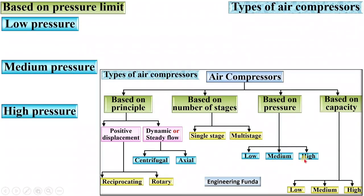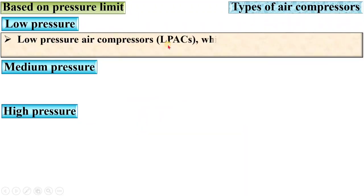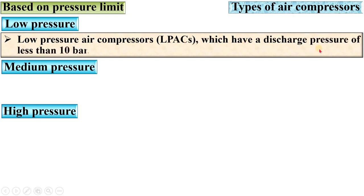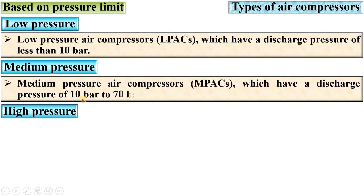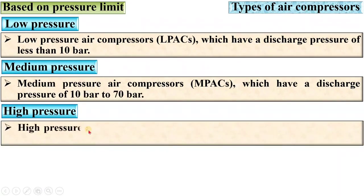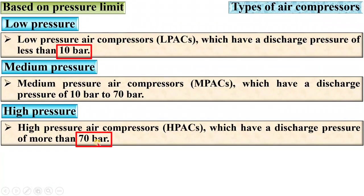Based on pressure limit — low, medium, and high pressure air compressors: low pressure air compressors (LPAC) have a discharge pressure of less than 10 bar; medium pressure have a discharge pressure of 10 bar to 70 bar; and high pressure have a discharge pressure of more than 70 bar. Remember: below 10 bar is low pressure, above 70 bar is high pressure, and between the two is medium pressure.